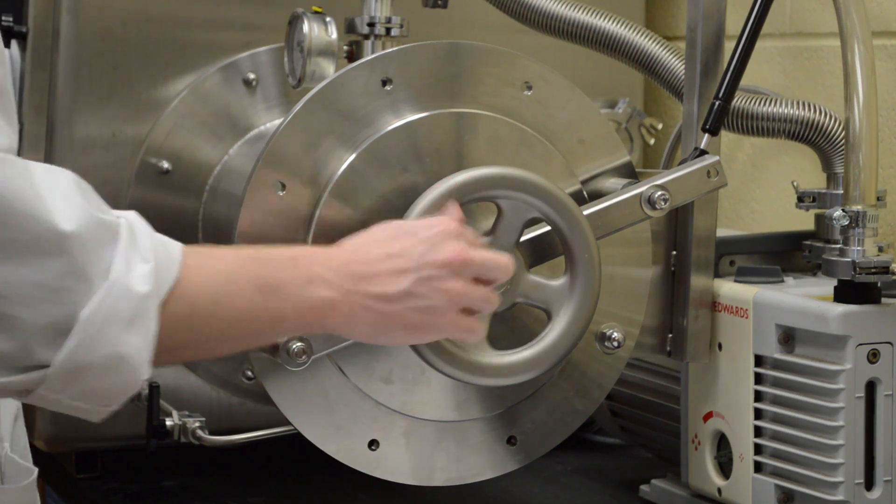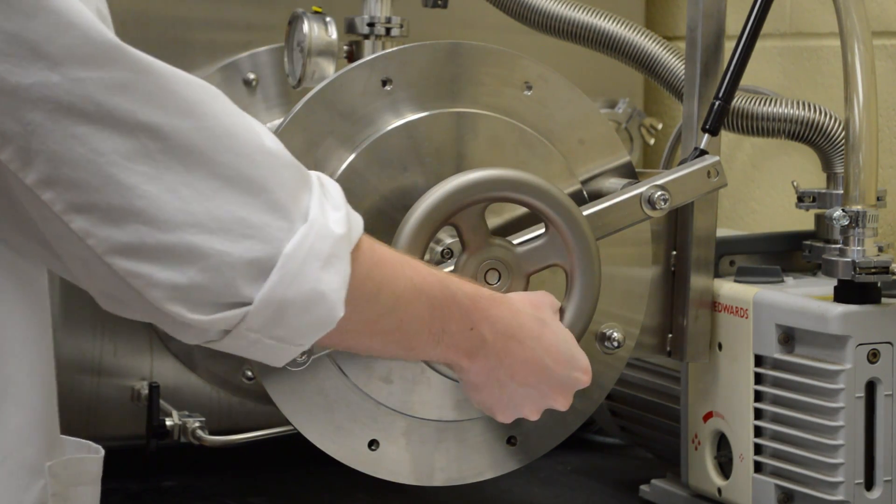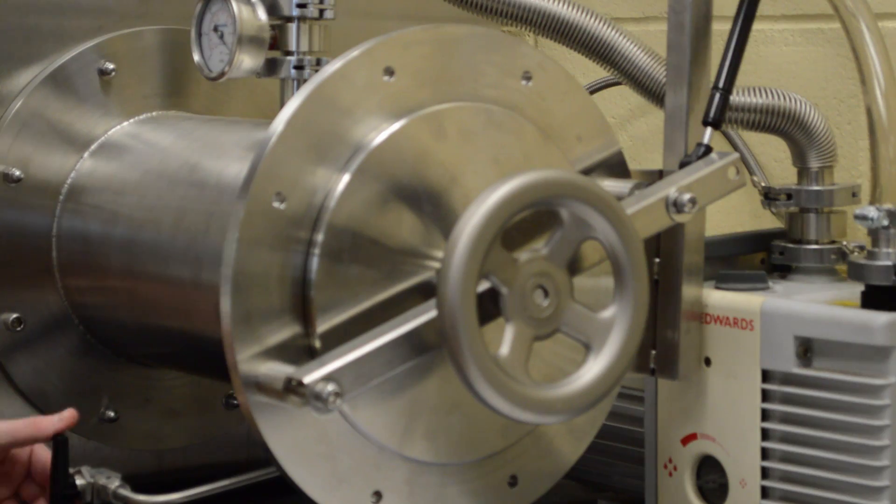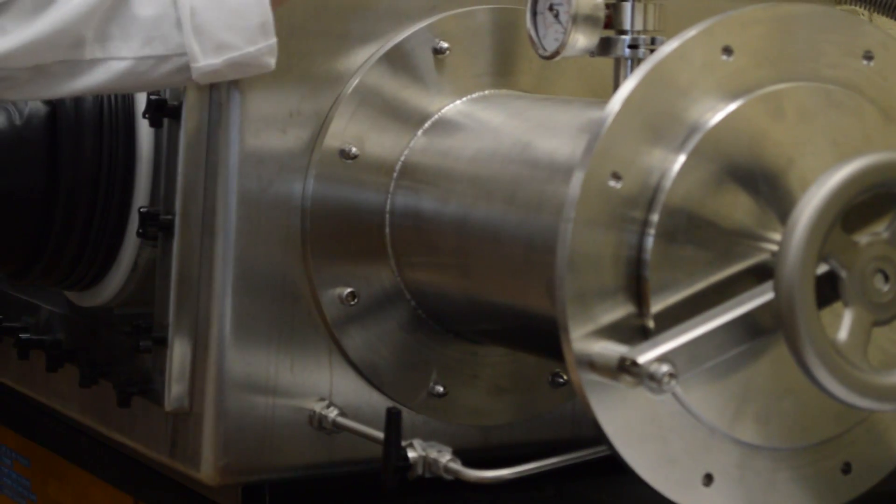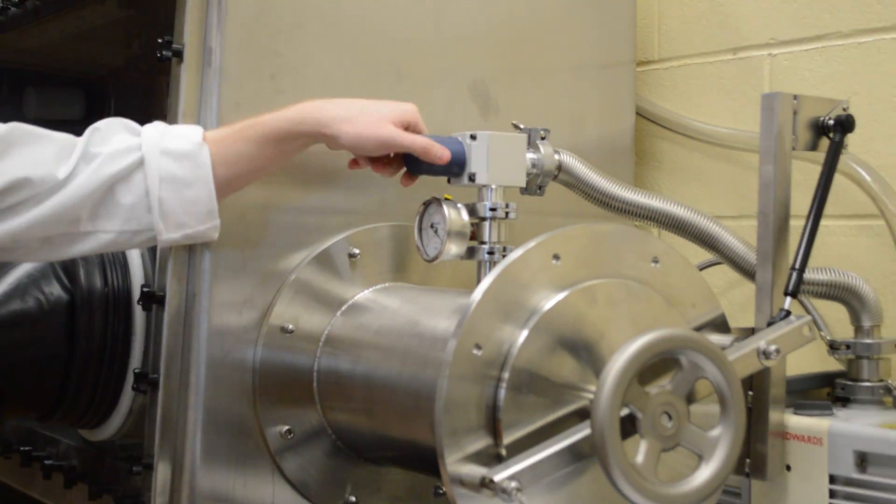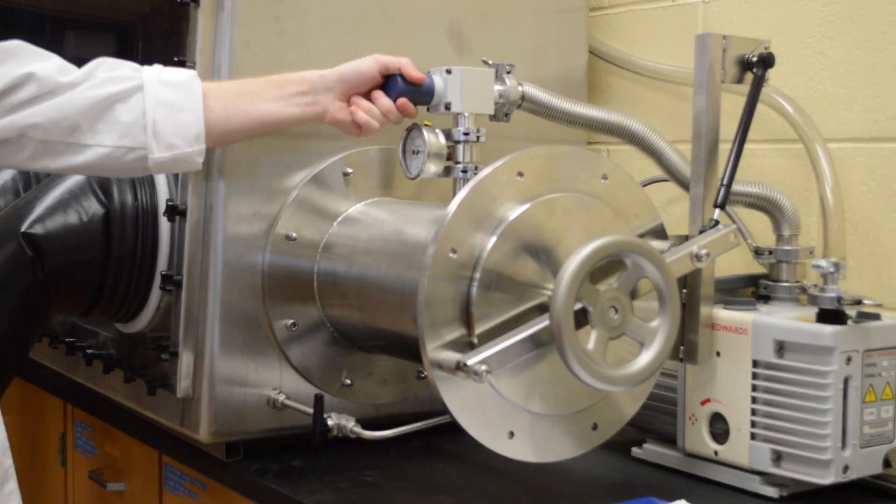When closing these, you want to finger tighten it as much as you can until it won't go any further, and give it another quarter of a turn. Now we need to evacuate this chamber to remove any oxygen inside. So we turn the vacuum on.